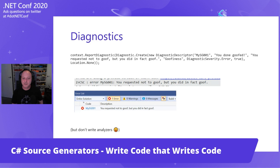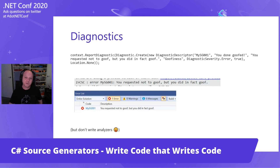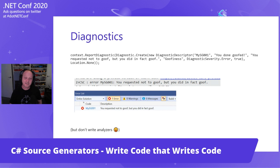Source generators can also report diagnostics, which is another huge win, particularly in the case where you're doing something at compile time instead of at runtime. If you're building a DI container and you don't have an implementation for some required interface, that would throw an exception at runtime — probably at app startup. If you convert that to a source generator, you can break the build when someone forgets to check in an implementation. You can also write Roslyn analyzers — don't use source generators to write analyzers, but it is nice to know that as part of generation, if you find errors, you can report them immediately.